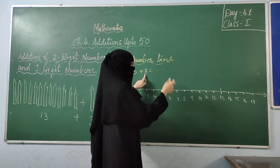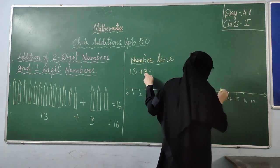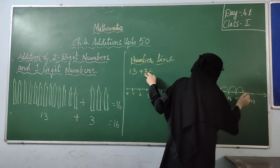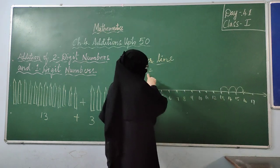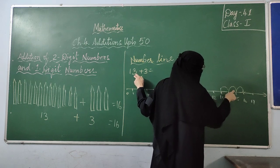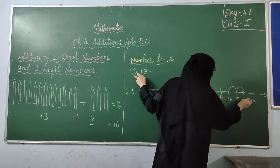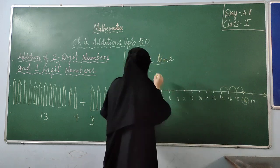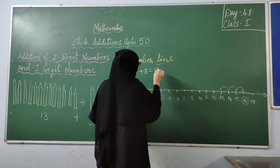So, what we have to do? Forward — we have to go 3 steps forward. Jump 3 steps: 1, 2, 3. So, when I am moving from 13, that is 13 plus 3 jumps — 1 jump, 2 jump, 3 jumps. I have taken 3 jumps forward. So, where do I end? I end at 16. So, what is the answer? 13 plus 3 is 16.